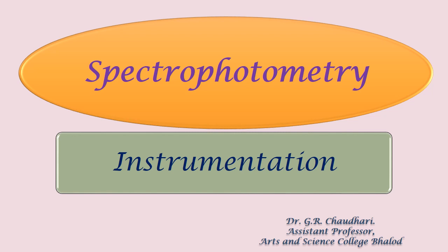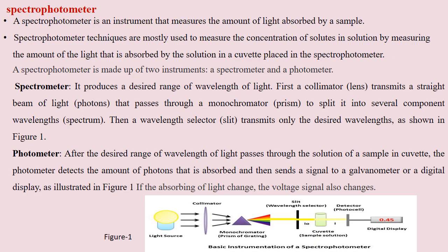Good afternoon friends. Today we discuss about the topic spectrophotometry instrumentation. A spectrophotometer is a device which is used to measure the amount of light absorbed by a sample whose concentration is to be determined. This device contains two parts: the first part is a spectrometer and the second part is a photometer. The combination of these two is a spectrophotometer.